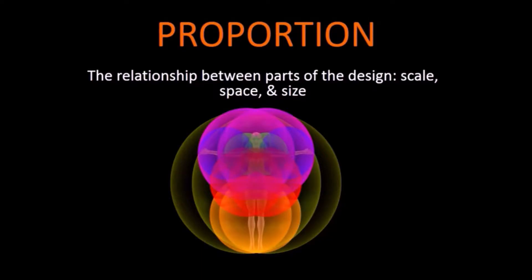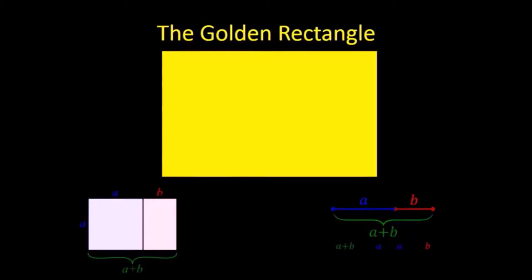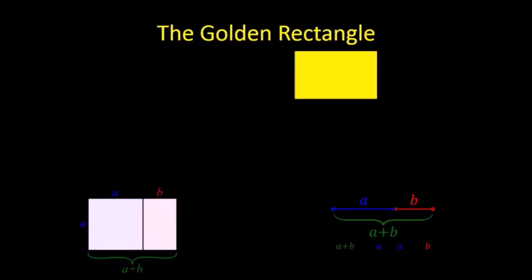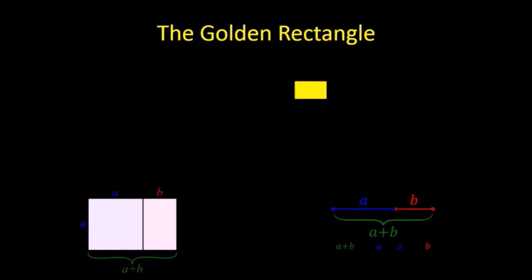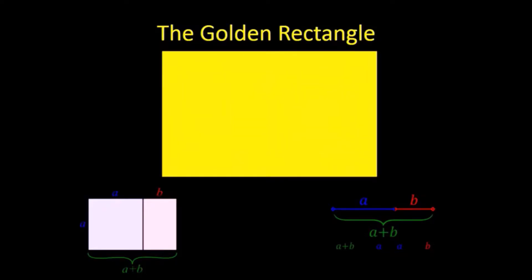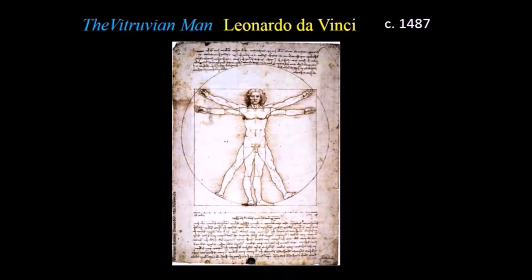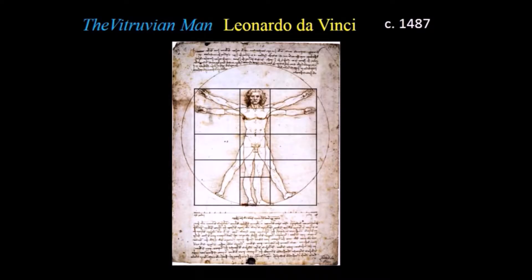Proportion is the feeling of unity created when all the parts, sizes, amounts, or number relate well with each other. So when drawing the human figure, proportion can refer to the size of the head compared to the rest of the body. The golden rectangle, the ideal mathematical proportion, can be seen in the proportions of the human body in Da Vinci's famous Vitruvian Man.